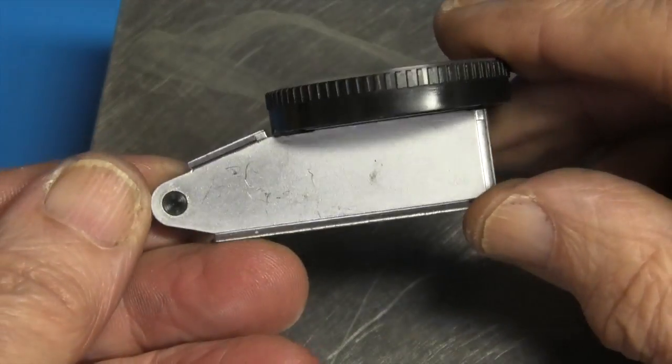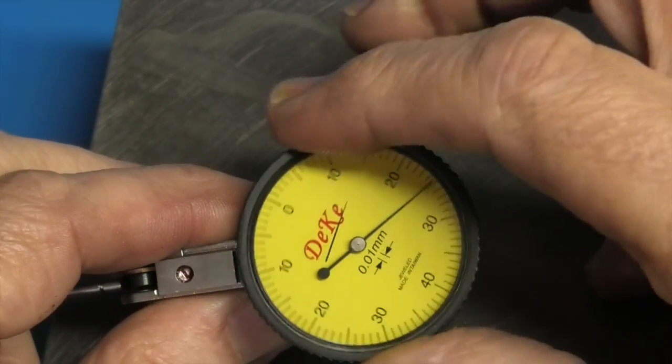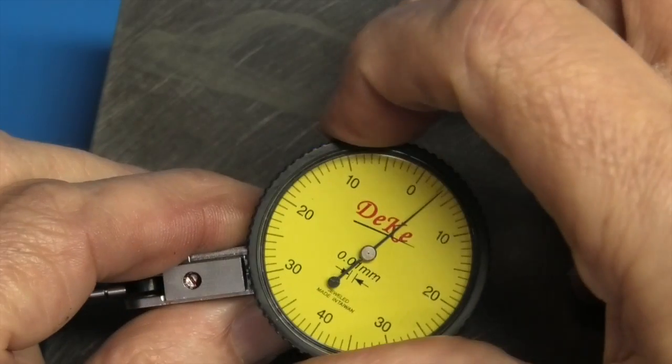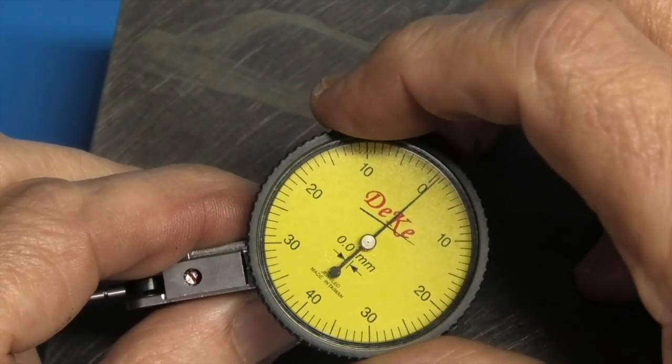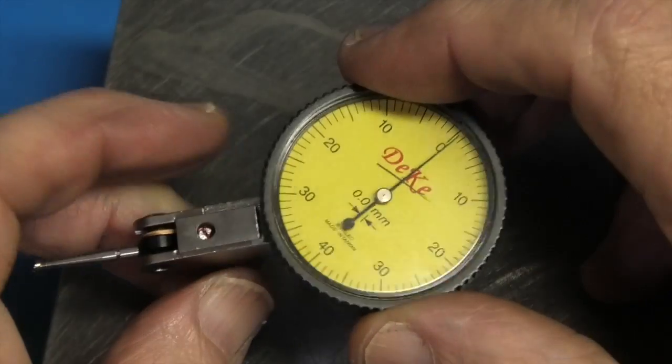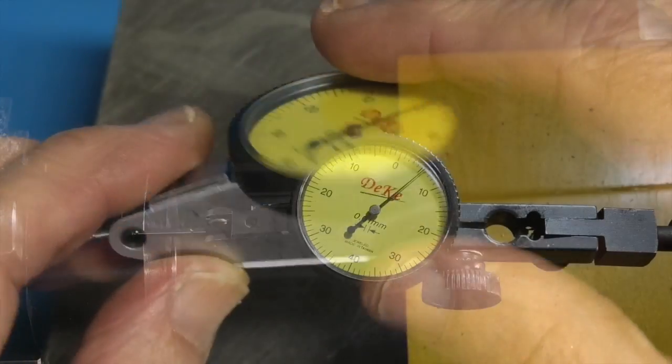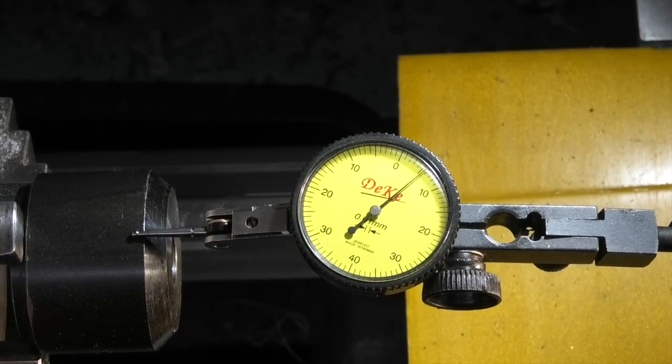Now that's the dial indicator. The top will swivel round so you can set your zero wherever you want it. Travel is 0.4 in either direction. Then you have the dovetails on three sides. So let's move over to the lathe.